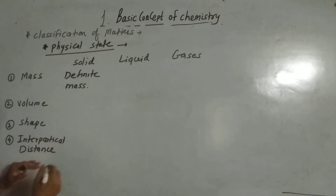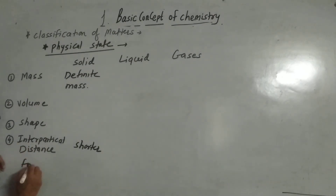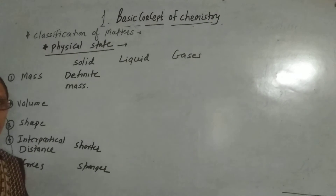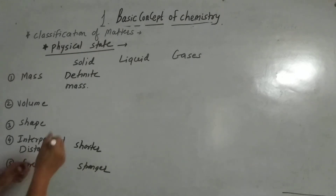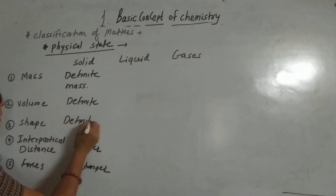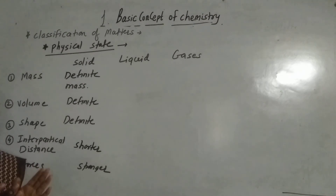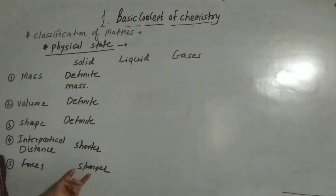The inter-particle distance is short, and therefore the inter-particular forces are very strong. These inter-particular forces are very strong, so they cannot be easily separated — they are completely arranged. So solid has definite mass, definite volume, and definite shape. Why do they have definite mass, volume, and shape? Because their particles are closely arranged, giving them a strong intermolecular force of attraction, and the distance between the particles is very short.